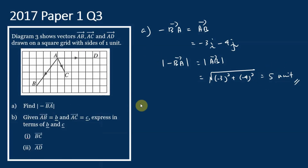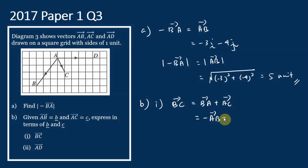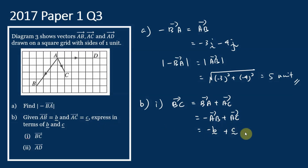Now let's move on to question (b). It is given that AB = b and AC = c. Express BC in terms of b and c. BC = BA + AC. BA equals negative AB, so BC = −AB + AC = −b + c.